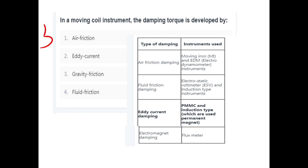Moving Coil Instrument — Damping Torque is developed by which method? Eddy Current Damping is the answer for PMMC. Moving Iron uses Air Friction Damping. Fluid Friction is used in static altimeters. Induction type instruments use Eddy Current. PMMC uses Electromagnetic Damping.